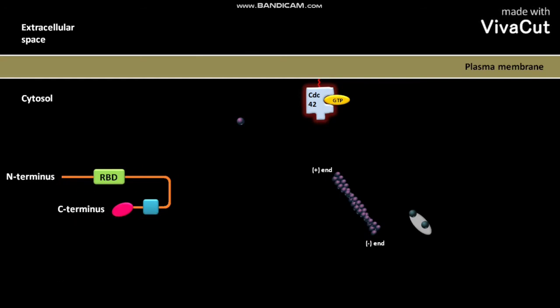The WASP protein has different regions like RBD, which stands for Rho binding domain, a G-actin binding domain, and an acidic domain.